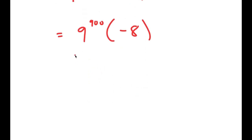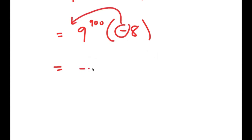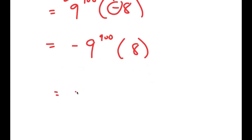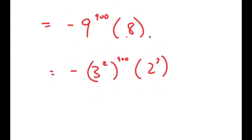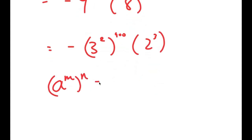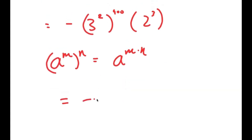Now from here I said I was going to simplify this as much as possible. We can't really get the exact value because 9 to the power of 900 is such a big number. However, we can get the simplified form. I'm going to move the negative sign to the front, giving me negative 9 to the power of 900 times 8. This gets me negative 3 squared to the power of 900 times 2 to the power of 3. Using the property that a to the power of m to the power of n equals a to the power of m times n, I get negative 3 to the power of 1800 times 2 to the power of 3.